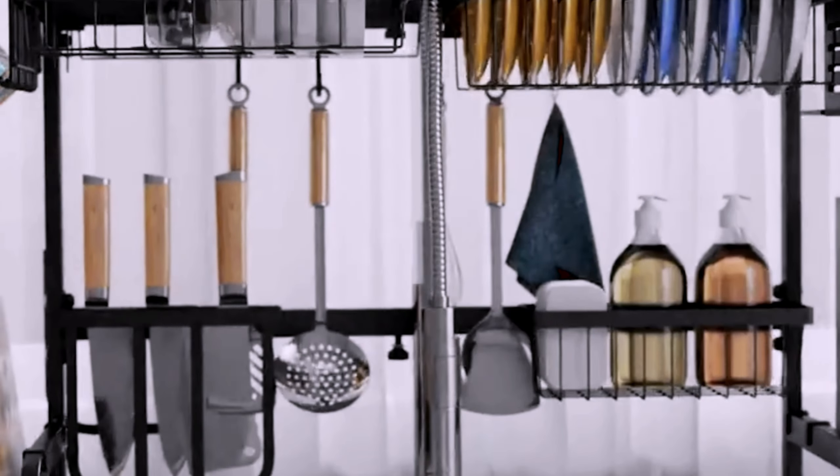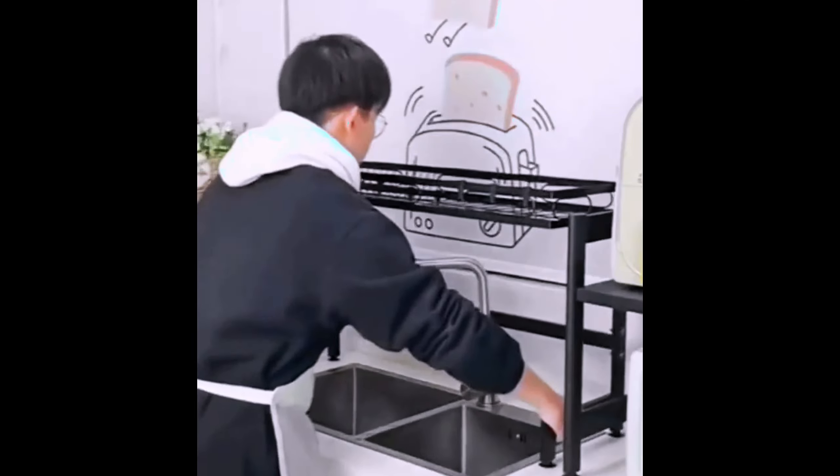With dimensions of 11.5 inches in depth, 34.6 inches in width, and 20.7 inches in height, it provides ample space for your dishware while saving valuable countertop space. The sleek black color of this dish drying rack adds a touch of elegance to your kitchen decor.